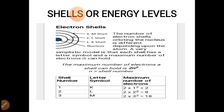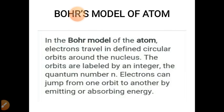Now let us look into the Bohr's model of atom. In the Bohr model of atom, electrons travel in defined circular orbits around the nucleus. The orbits are labeled by an integer, the quantum number n. Electrons can jump from one orbit to another by emitting or absorbing energy.